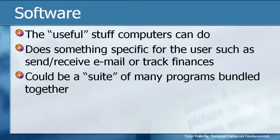Software can also be a suite of many different programs bundled together. For example, Microsoft Office is software, but it's not one software program — it's a package of multiple programs. The Microsoft Office suite includes things like Access, Excel, Word, PowerPoint, and Outlook — five separate software programs bundled together. One of the nice features of using a suite of software products is that they are built to work together.